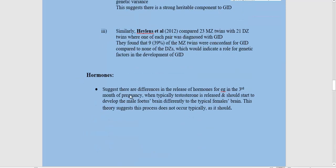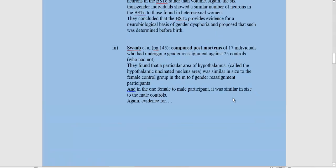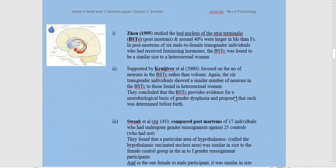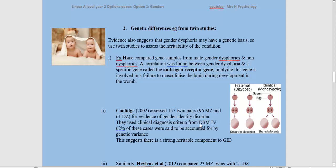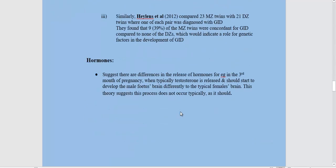Finally, on hormones: this suggests that there are differences in the release of hormones — for example, in the first trimester, around the third month of pregnancy, where typically testosterone is released and should start to develop the male foetus's brain differently to the typical female's brain. The theory suggests that this process doesn't occur typically as it should. You've got plenty of evidence here — you don't need all of it, but a minimum of at least one from each area for a pass.